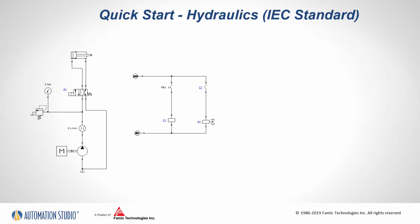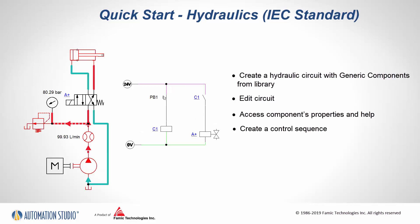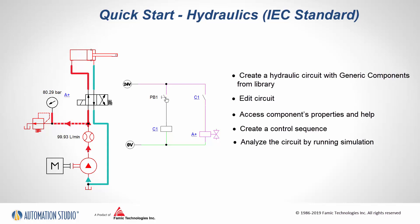This training video outlines the steps to create your first hydraulic or electrohydraulic circuit in Automation Studio using IEC standards for electrical control. In the process of recreating this circuit, the user will learn how to create a hydraulic circuit with generic components from the library, how to do circuit addition, how to assess component properties and help, how to create a control sequence, and how to run simulation and analyze the circuit.